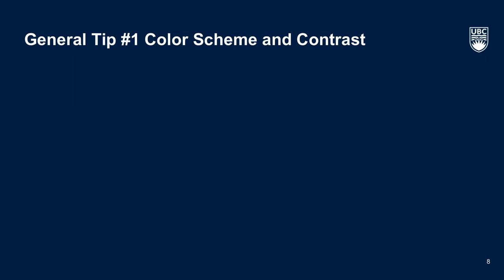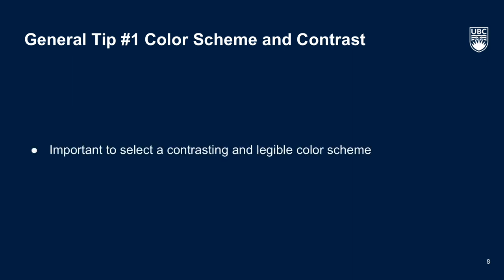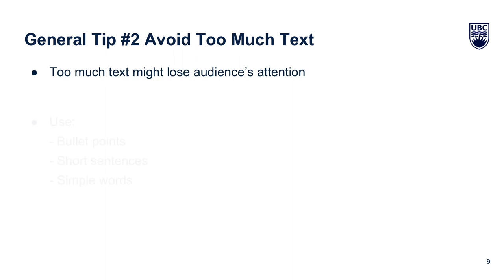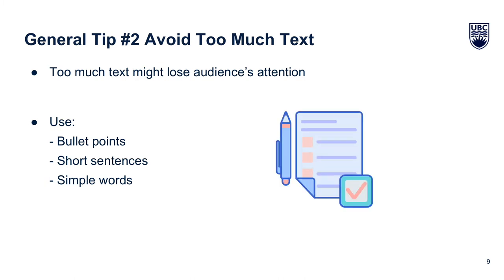Now let's go over some general tips on what to include when designing a presentation. Here, the background color is too bright and we cannot see the title — this looks much better. General tip number one is to select a contrasting and legible color scheme. Avoid packing your slides with too much text; don't give your audience too much to read or they get exhausted. Try instead to use bullet point form, short sentences, simple words, and convey a couple of points per slide — like what we're doing right now.